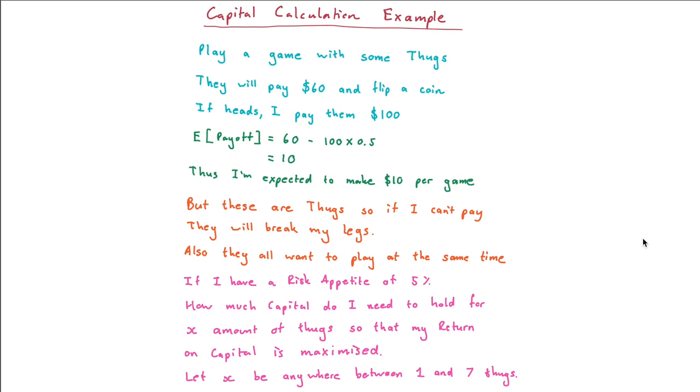The question now is how much capital do I need to hold for an X amount of thugs so that my return on capital is maximized given this 5% risk limit? Now, what we're going to do is we're going to let X be anywhere between 1 and 7 thugs. And we're going to see what is the probability of ruin and how much capital I need to hold and what is going to be the expected return.